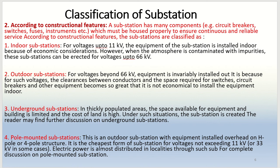Pole mounted substation: this is an outdoor substation with equipment installed overhead on an H-pole or 4-pole structure. It is the cheapest form of substation for voltages not exceeding 11 KV, or 33 KV in some cases. Electric power is almost entirely distributed in localities through such substations in India.